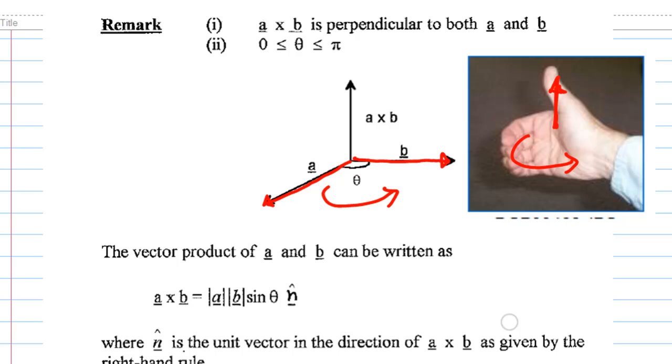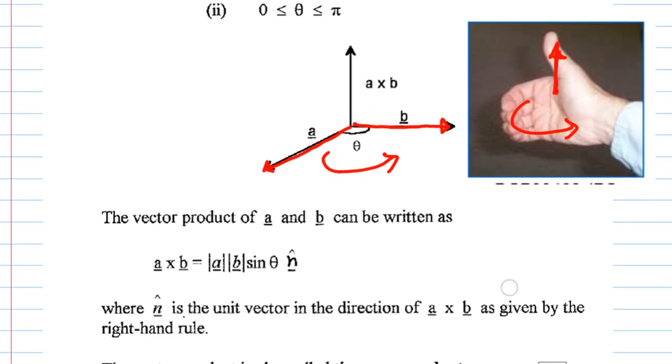And the magnitude of a cross b is the magnitude of a times the magnitude of b times sine theta, times the unit vector n, where unit vector n is a unit vector in the direction of a cross b given by the right-hand rule where the thumb shows.